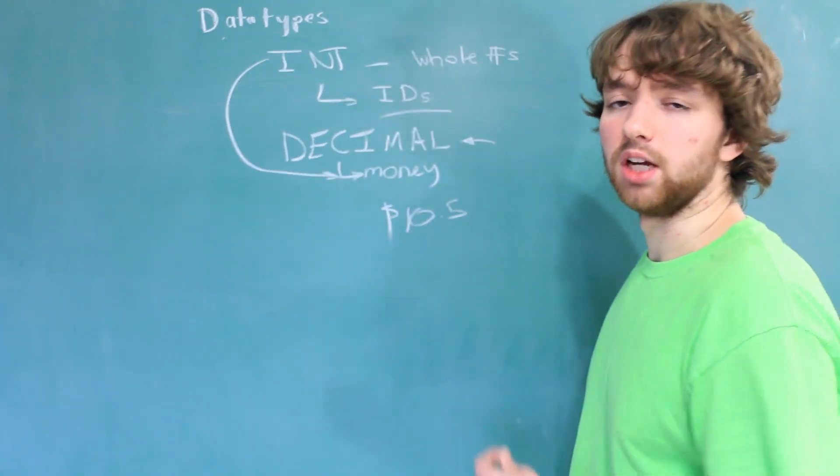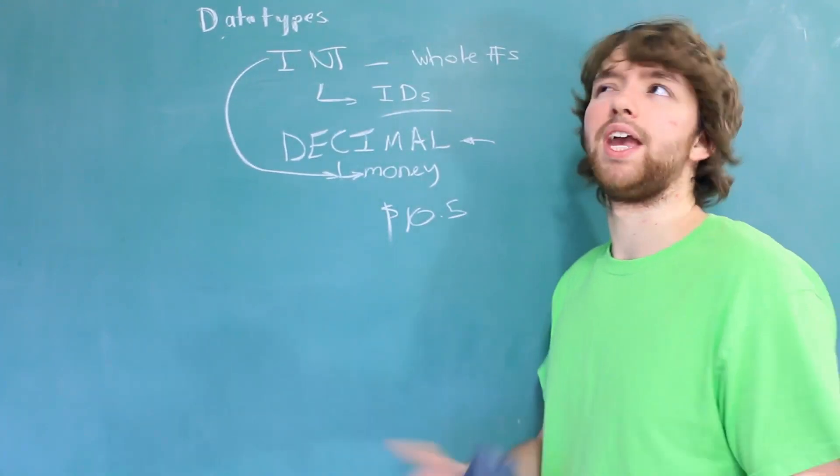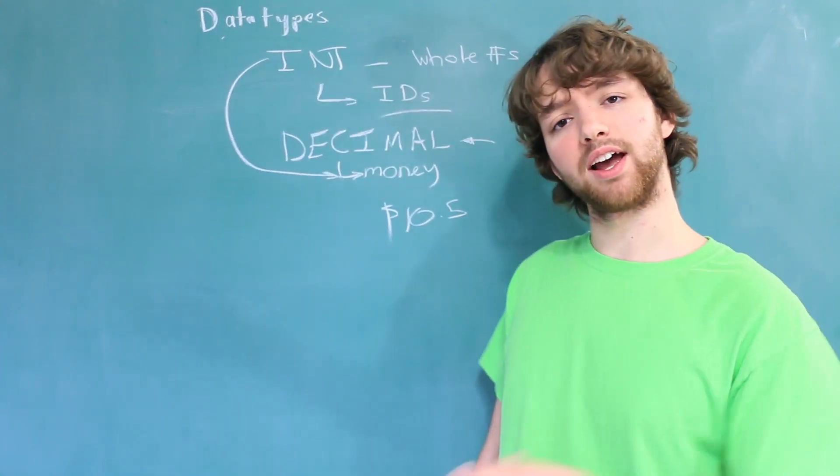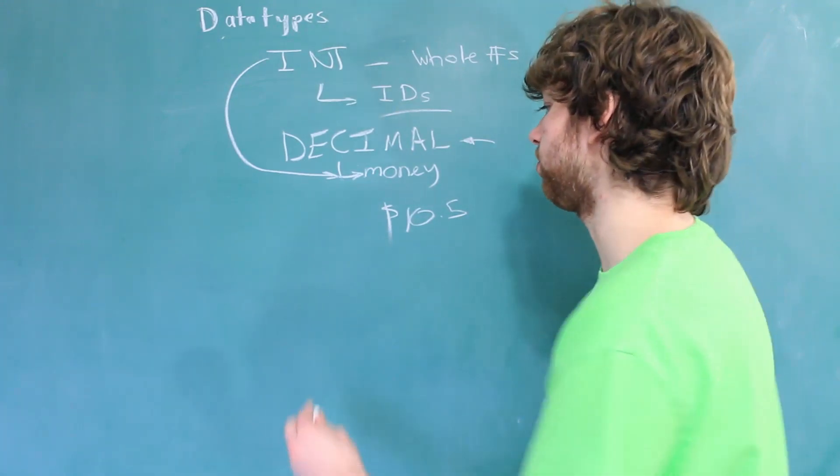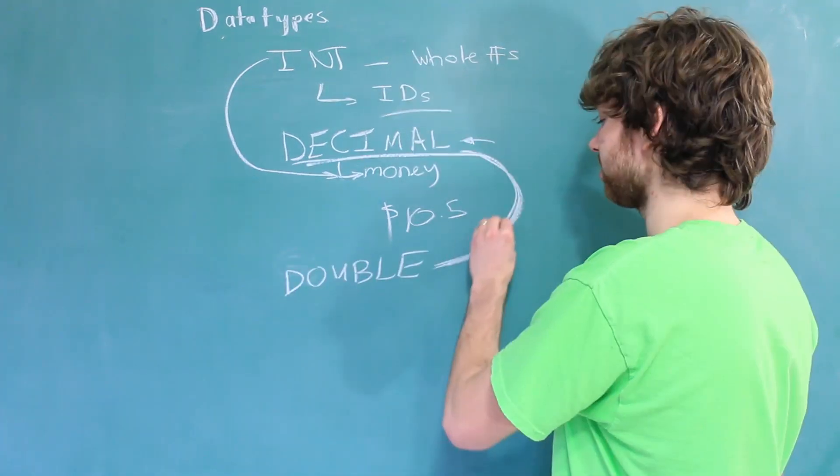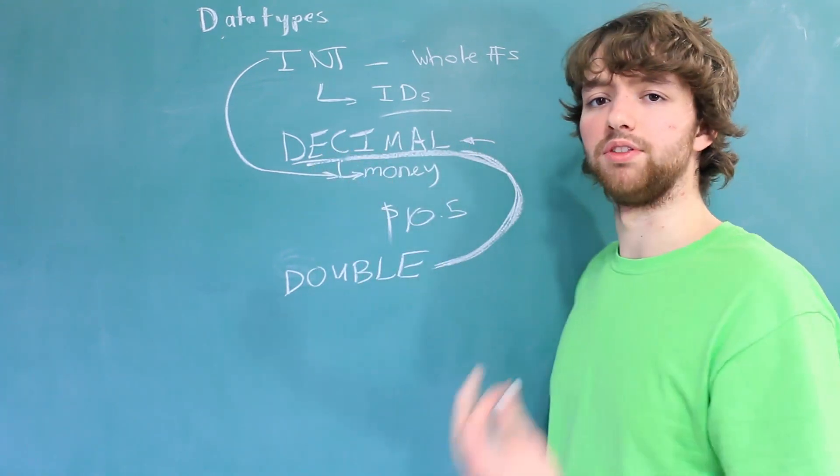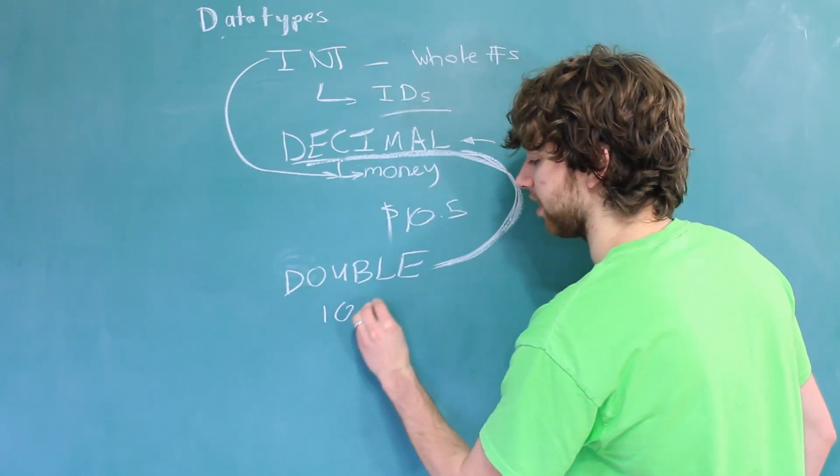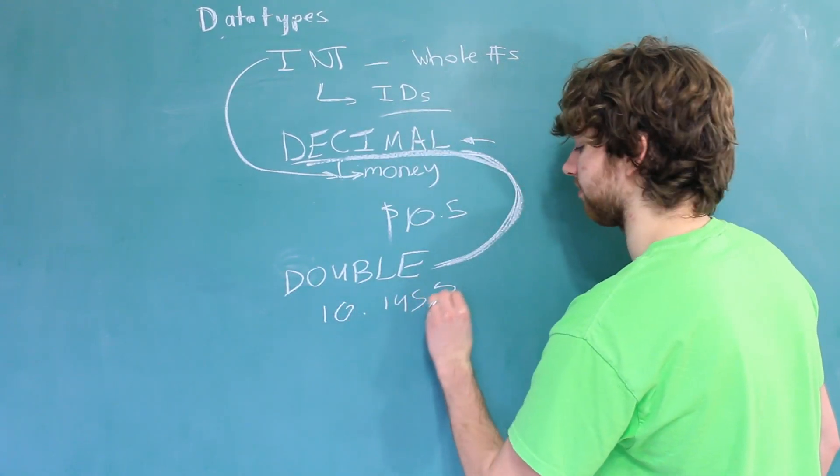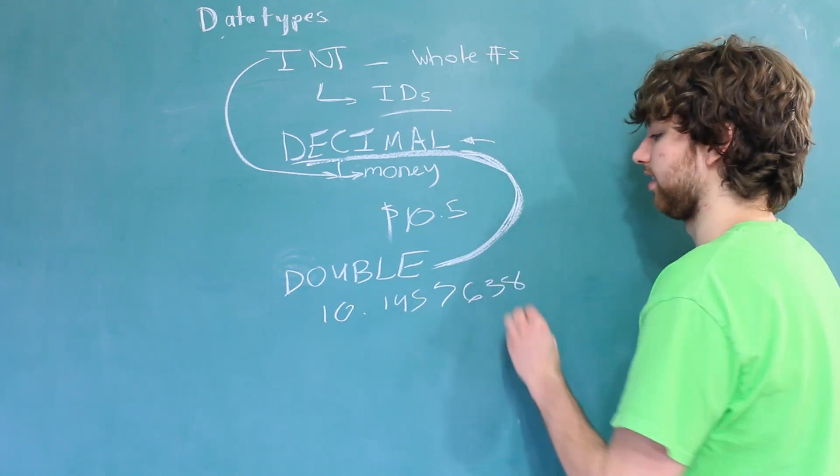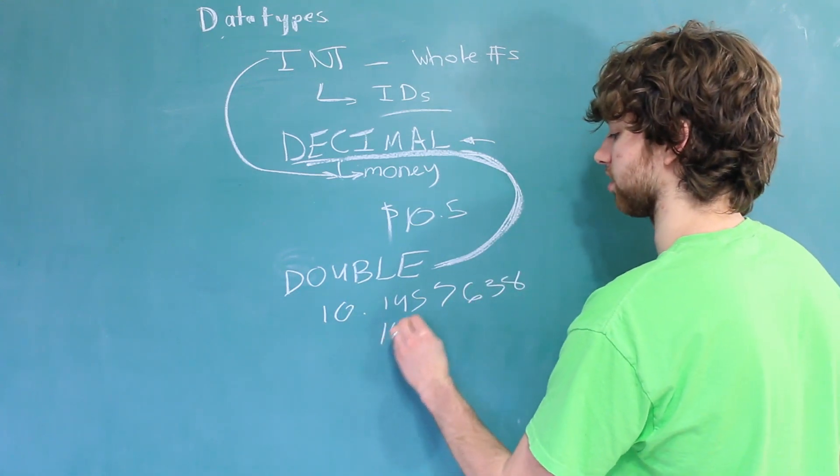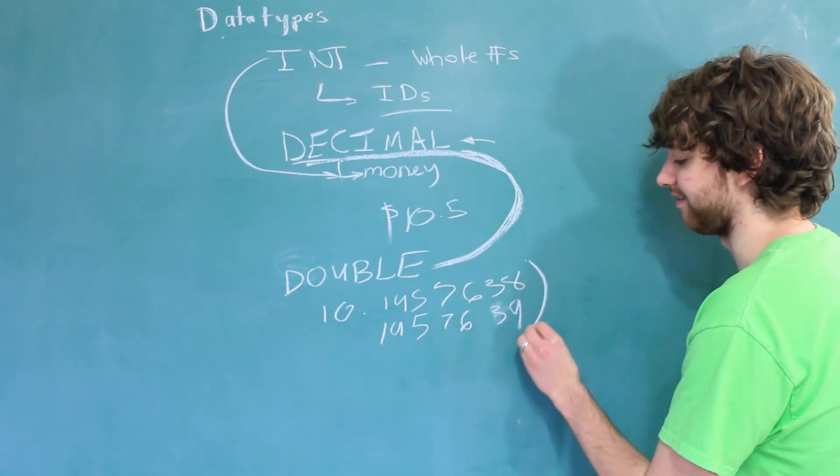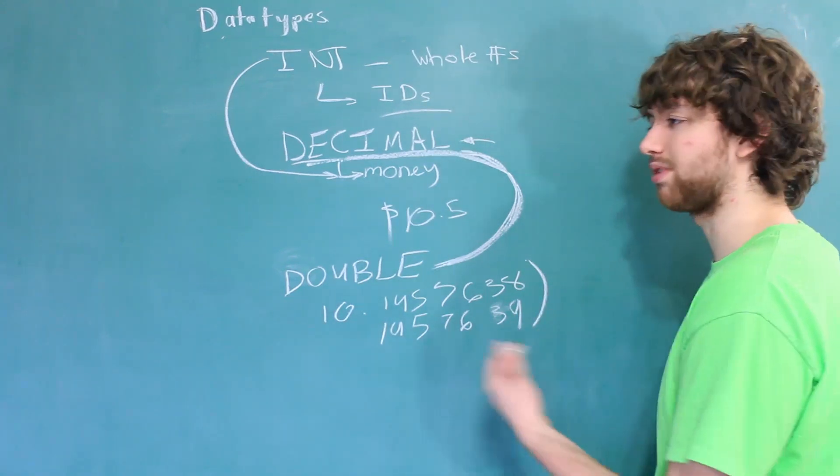But you're only going to want to use that type if you need perfect math, meaning you can't gain fractions of a penny or lose fractions of a penny. If it is okay to kind of waver on the precision a little bit, you can use the double type. This is the preferred data type when you're working with numbers that you don't have to be perfect on precision. For example, if you had the number 10.1457638. And it's okay if it's a little bit different, such as 1457639. Well, you can see here that there's a very minor difference between these.